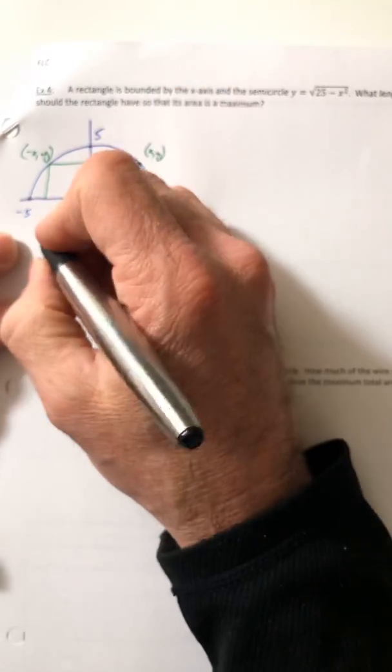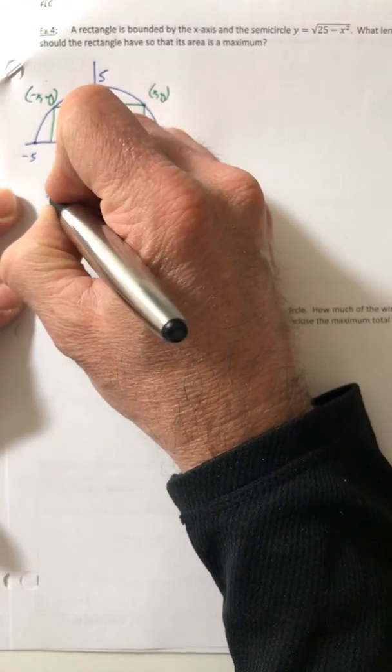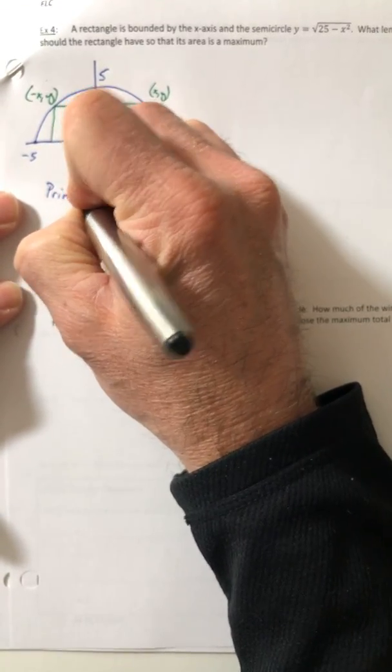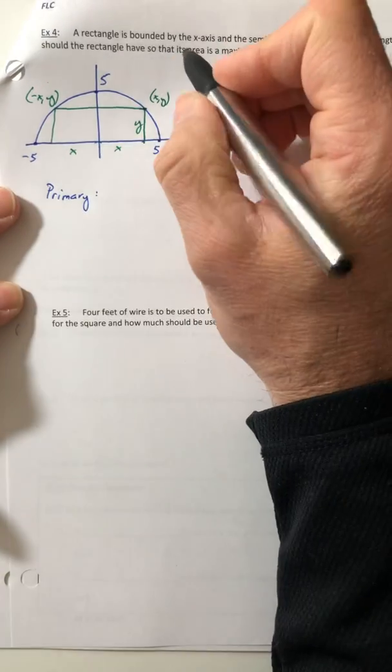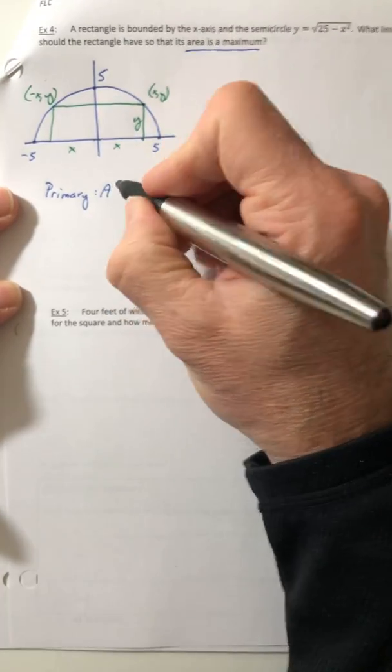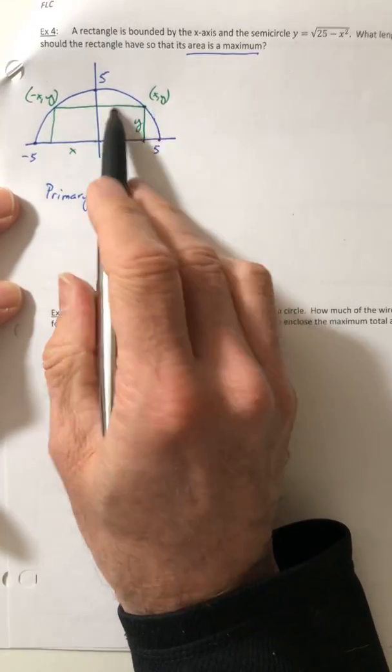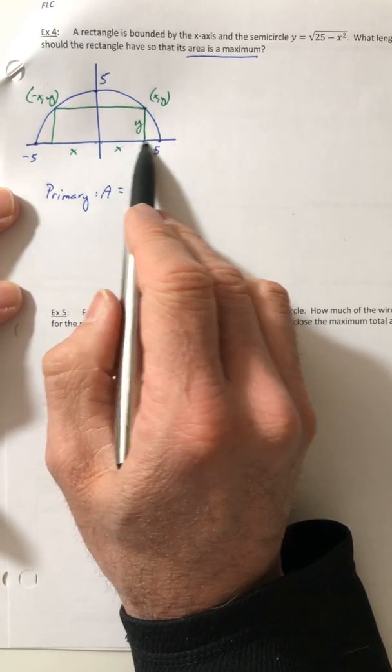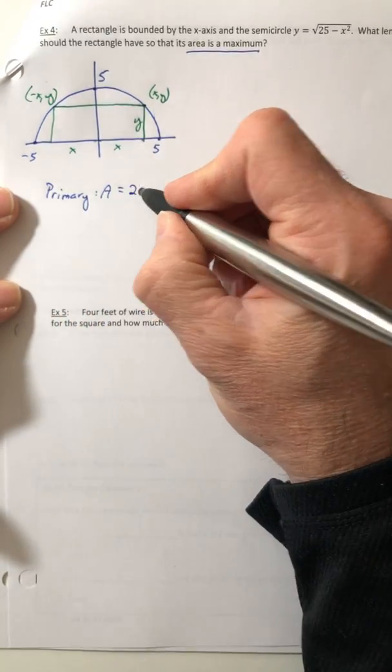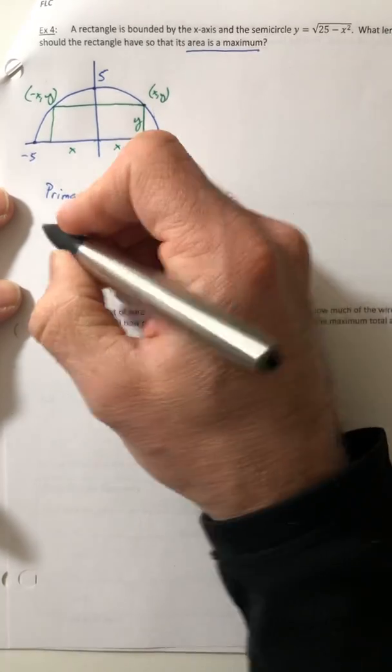So let's get our primary and secondary equations going. So our primary equation, area is a maximum. So I want the area. So I got to be a little careful though because I want the area of the entire rectangle, not just this half or this half. So the entire base is 2x. And then the height is just y.